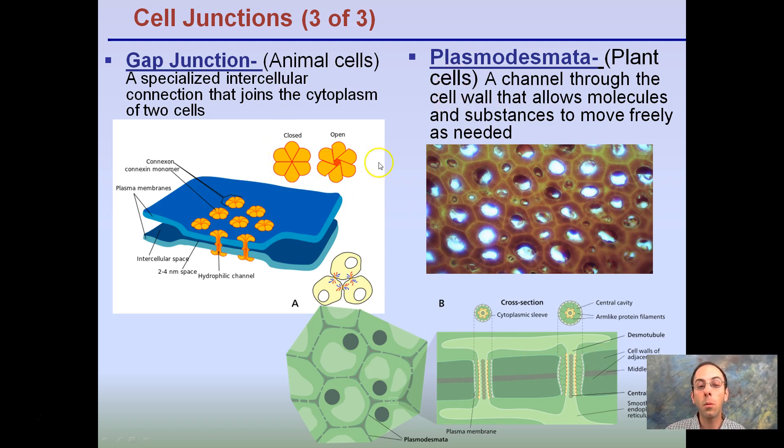So remember, the same basic structure occurs in plant cells as plasmadesmata and in animal cells as gap junctions. Even though they're basically the same thing, plant cells have that cell wall.